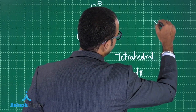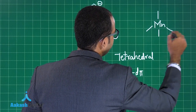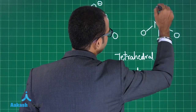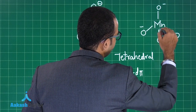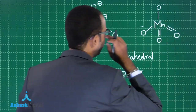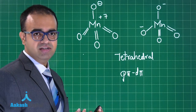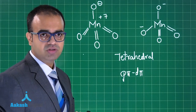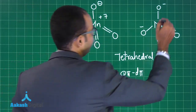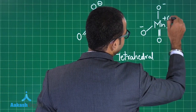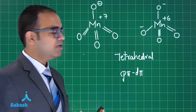Now for the manganate ion: the difference between permanganate and manganate is that here two oxygens are carrying negative charges, and there are two pi bonds. Both are tetrahedral, both have Pπ-Dπ bonds. The difference is permanganate has Mn in the plus seven oxidation state and manganate has Mn in the plus six oxidation state.